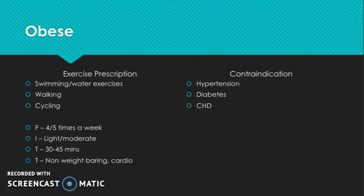Another contraindication for obese people is diabetes, which is a relative one because as long as it's controlled, it's fine. High blood sugar can cause damage to blood vessels, organs and nerves, and can lead to heart disease or stroke. Limited blood supply to the chest can again cause angina. But if it's controlled and someone is taking their medication properly and managing it, then it's not going to be an issue for exercise.